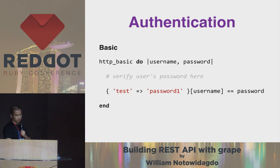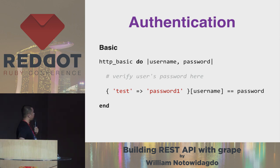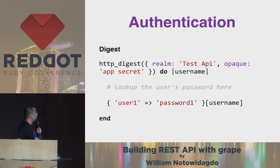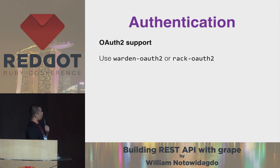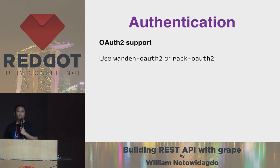The last part I want to introduce you to with GRIB is authentication. GRIB provides us with basic HTTP authentication, digest authentication, and also when you want to use OAuth, you can use warden OAuth or rack-OAuth.